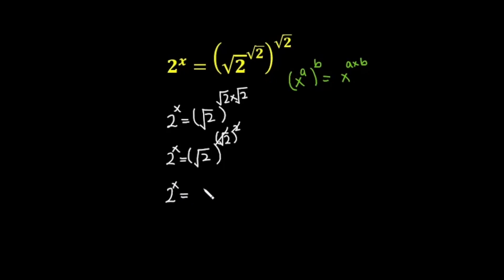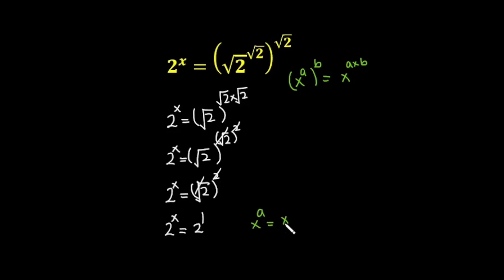This square and this under root will cancel, so this is 2 raised to the power x is equal to 2, which I can write as 2 raised to the power 1. The bases are the same, so you can equate the powers. If x raised to the power a is equal to x raised to the power b, you can write a is equal to b if bases are same. Applying the same rule here, the powers equate, giving x is equal to 1. So this is my final answer.